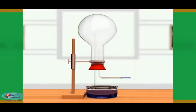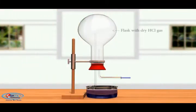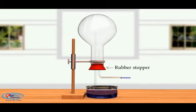See the experiment. Take a dry round bottom flask filled with dry HCl gas. Now, arrange the apparatus as shown on the screen. The mouth of round bottom flask is fixed to rubber stopper, which have two holes.